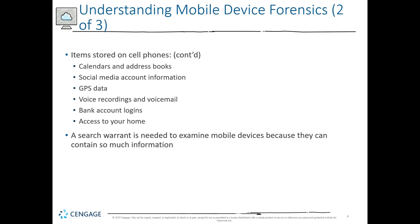Search warrants are necessary to examine mobile devices, predominantly because they have so much data. In a private sector where your job provides your mobile device, that's going to be part of the documentation that general counsel will provide. Some employers have paperwork that the employee signs saying that the asset belongs to the company and so does all information on the device, thus granting the employer the right to search that mobile device at any given time. It really goes back to what policies and procedures are already in place.